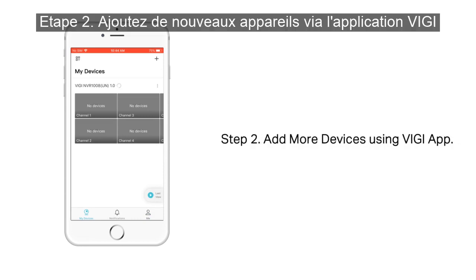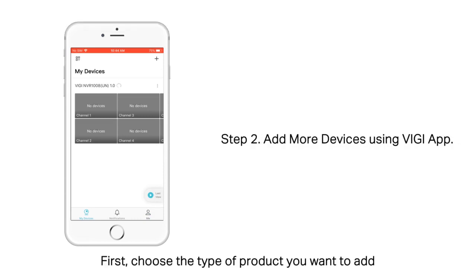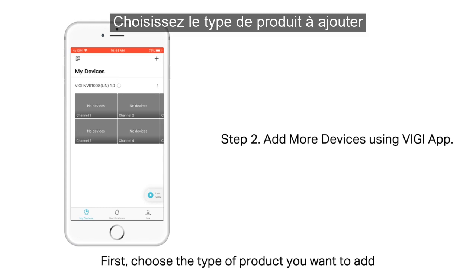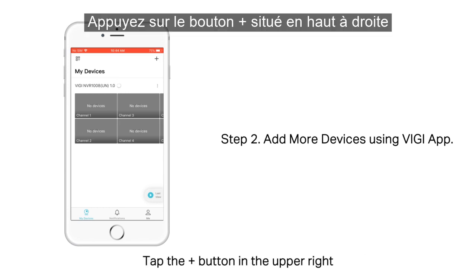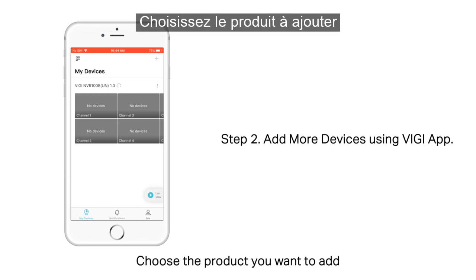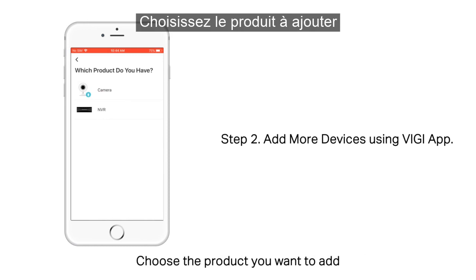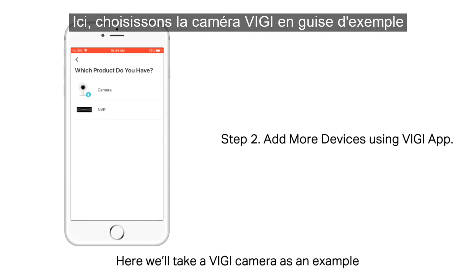Step 2: Add more devices using the Vigi app. First, choose a type of product you want to add. Tap the plus button in the upper right. Choose a product you want to add. Here we'll take a Vigi camera as an example.